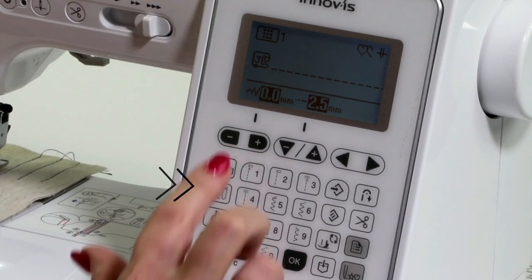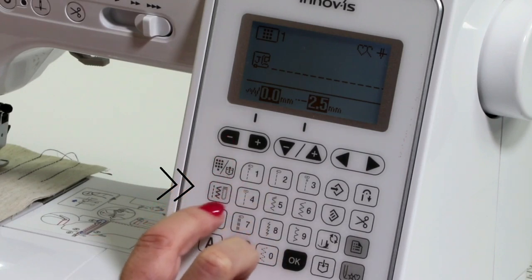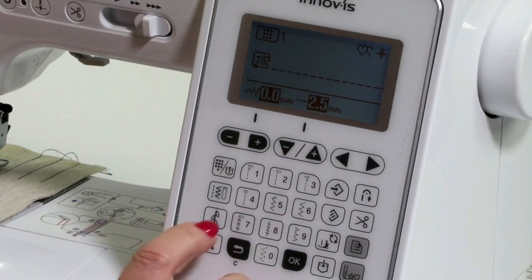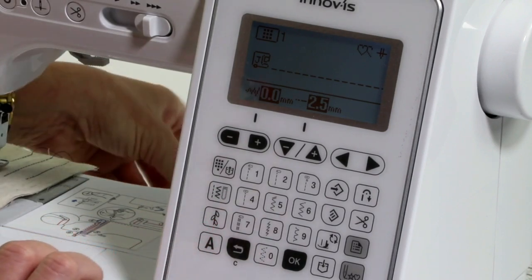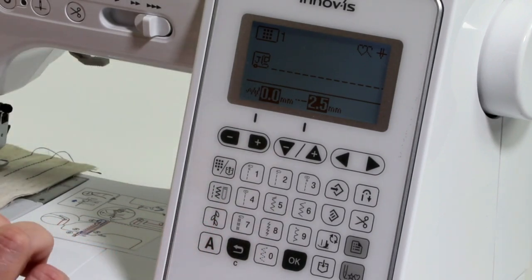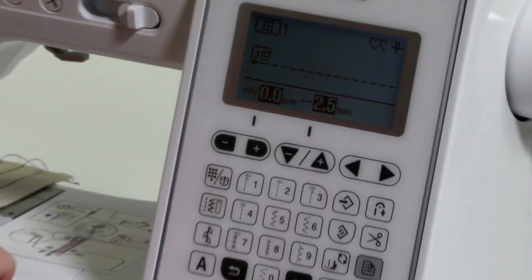Now on this side, this is where we're going to select our buttonholes from here. And this is our decorative stitches. And so this is where our stitch card comes into its zone.